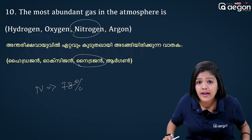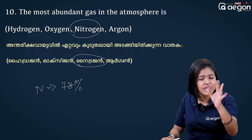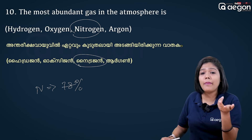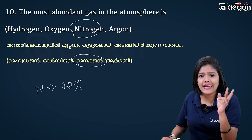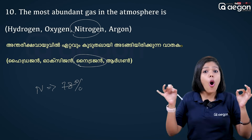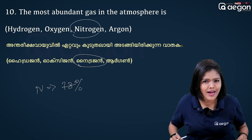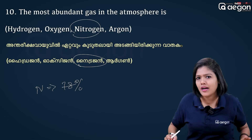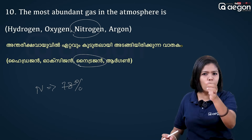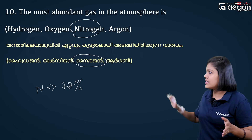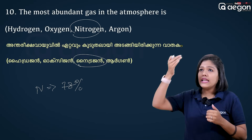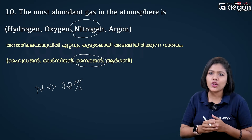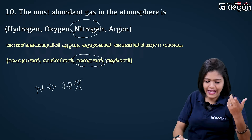Nitrogen is about 78% of the atmosphere. The second most abundant gas is in the 2nd position — oxygen at 21%. If you have a nitrogen question with these options, you must know these percentages.